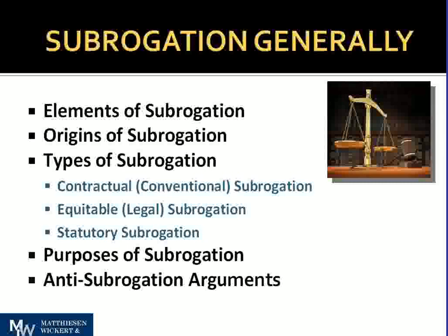Contractual subrogation is, of course, the auto policy where the policy language says that if the insured makes a recovery from any third-party tortfeasor, the insurer is subrogated to the rights of that recovery. There may also be language about attorney's fees or the made whole doctrine. But ultimately it's a contractual right — that's the second type. The third type is what we're dealing with today: statutory subrogation, which is precisely what workers' compensation is, although it's really statutory reimbursement. It doesn't really hinge on the elements of subrogation.